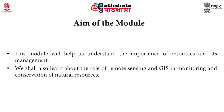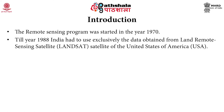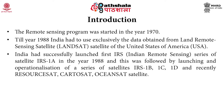In this module we will also learn about the role of remote sensing and GIS in monitoring and conservation of natural resources. The remote sensing program was started in the year 1970. The first satellite, Landsat, came in the year 1972, previously known as Earth Resources Technology Satellite. Till the year 1988, India had to use exclusively data obtained from other satellites such as Landsat of the United States of America. India successfully launched its own Indian Remote Sensing series of satellites, the first of which was IRS 1A, launched in the year 1988.